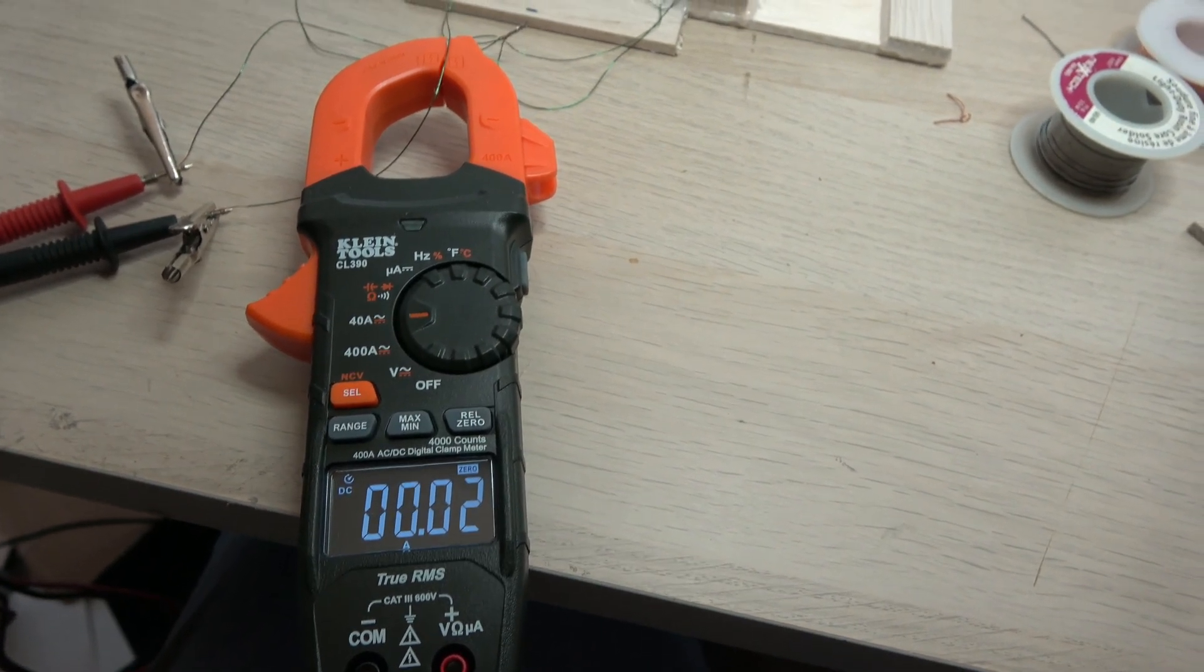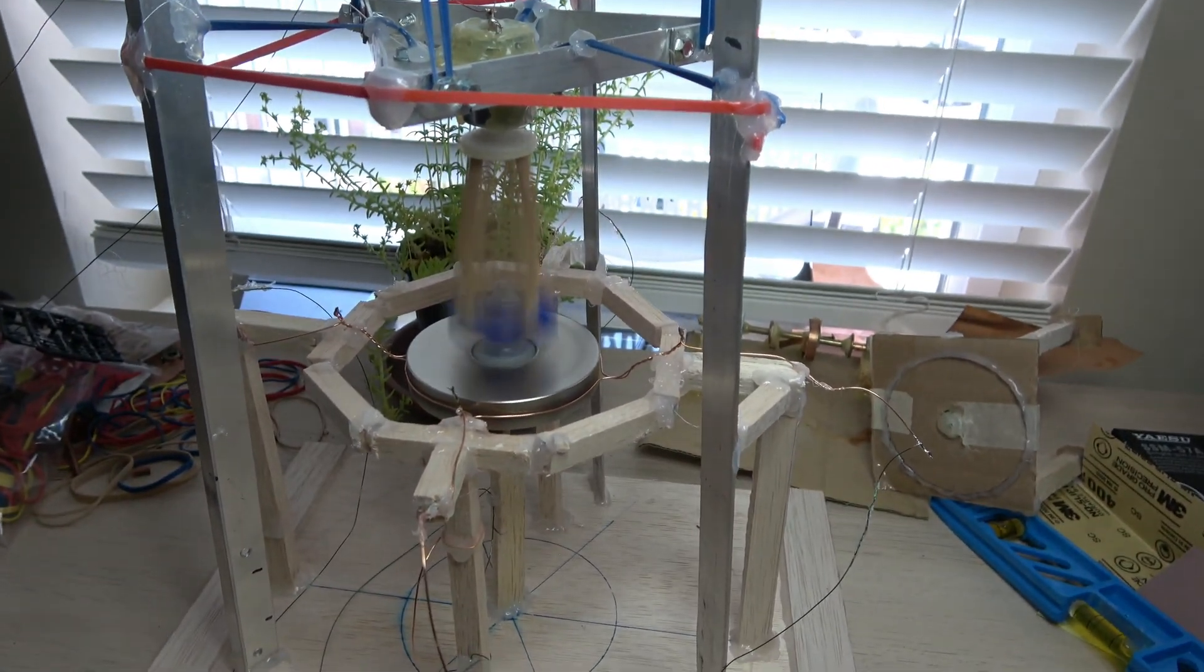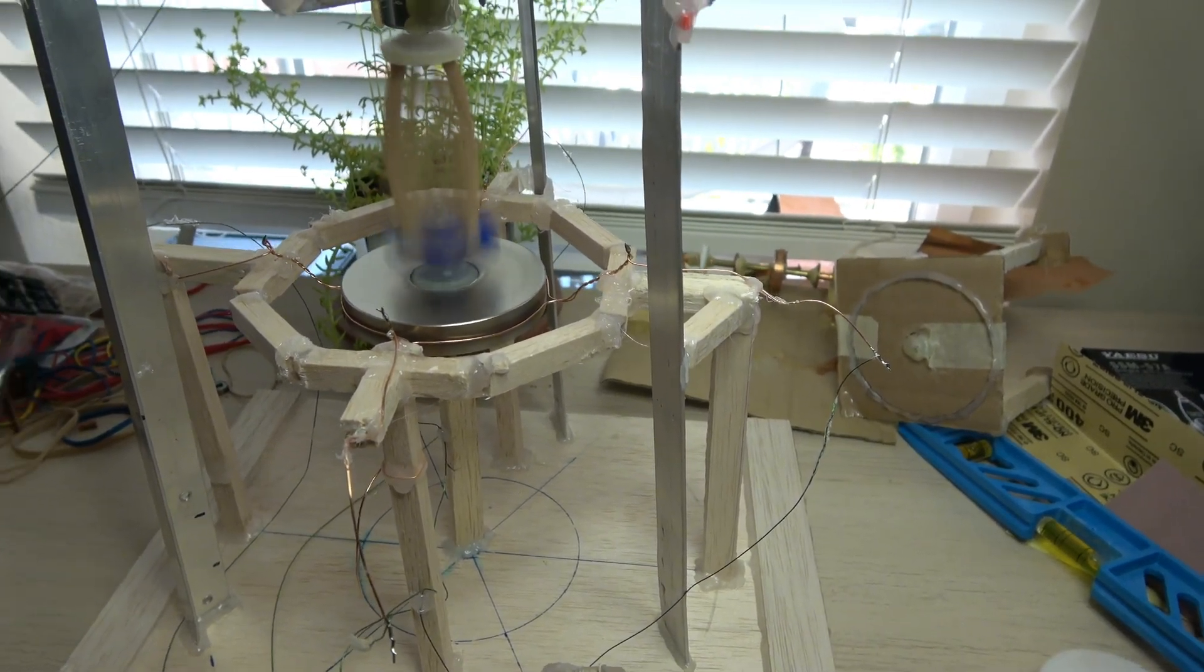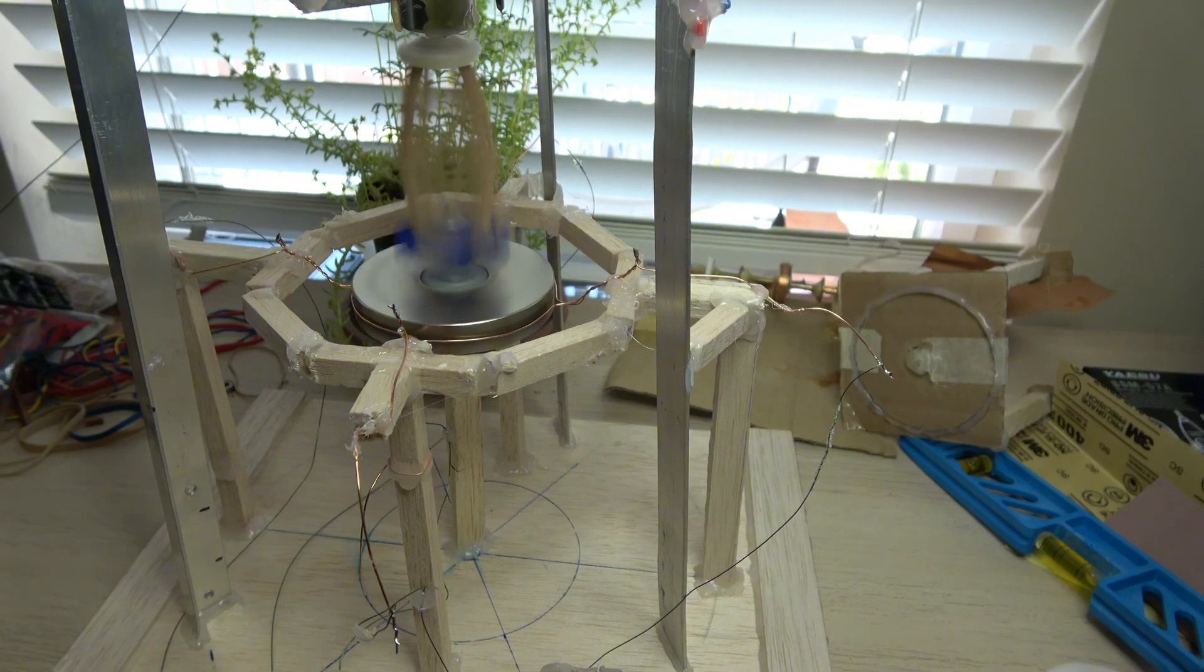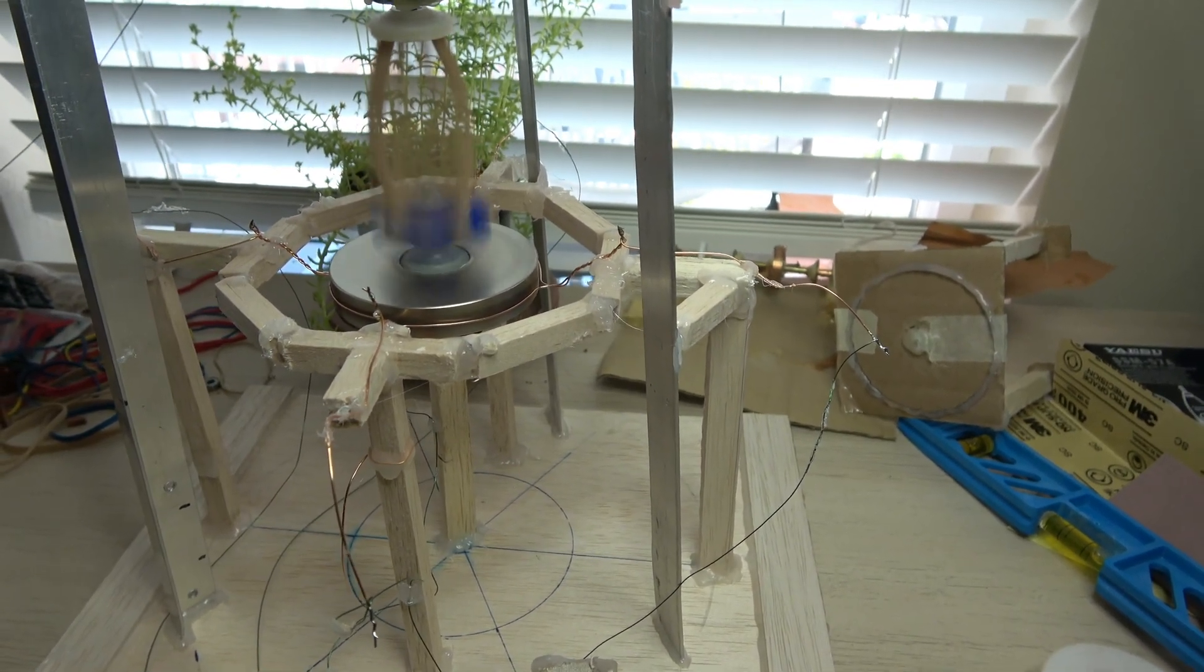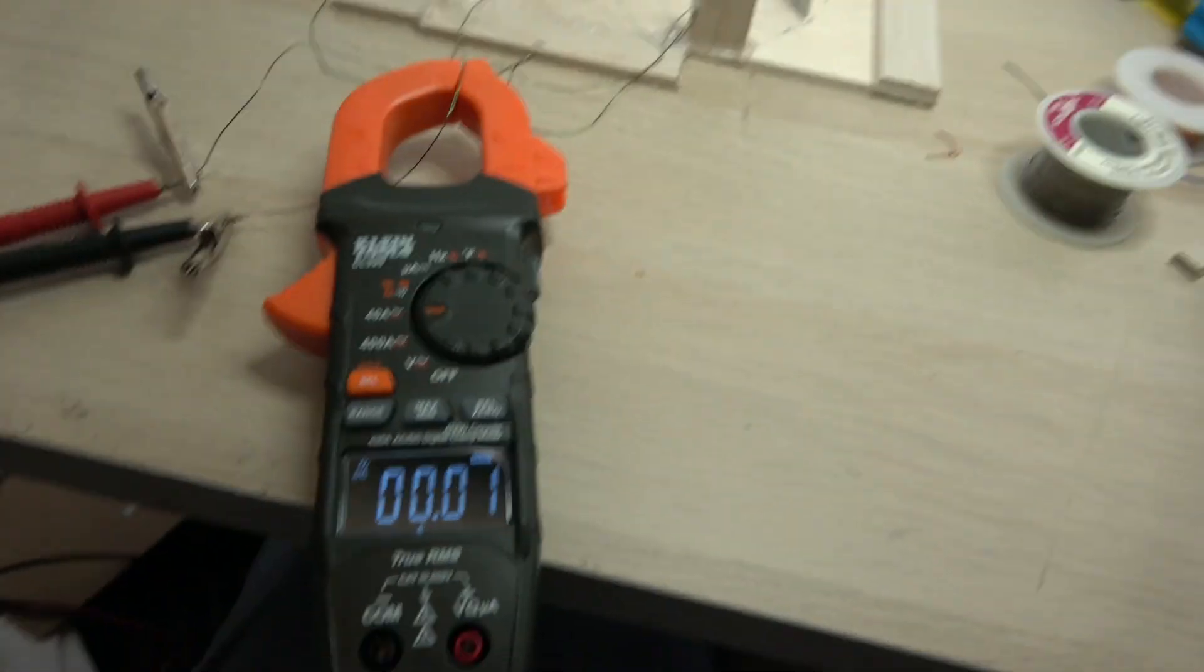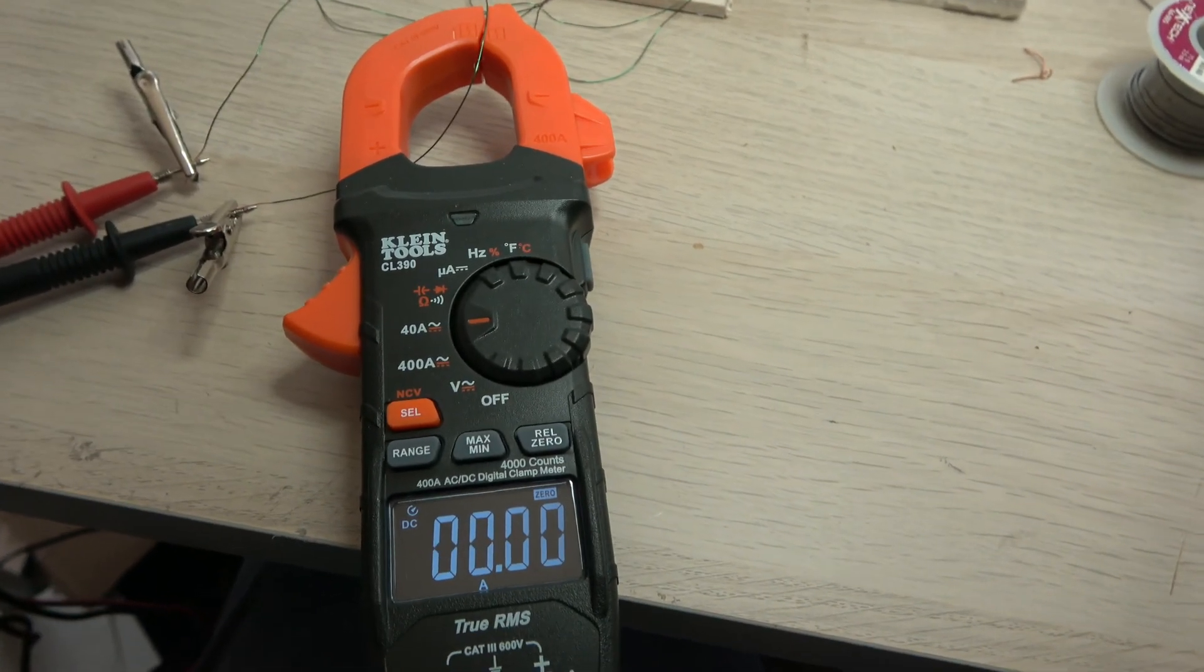Of course, no revolutionary technology is without its challenges. The N machine is no exception. We'll explore some of the key hurdles that have prevented it from reaching mass production, like improving efficiency, dealing with vibration and heat, and finding the right manufacturing processes.